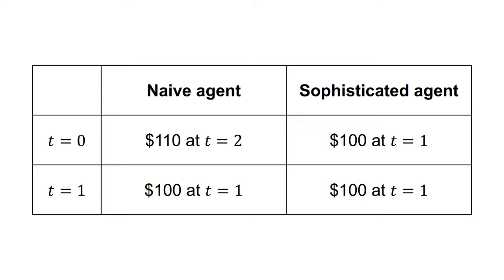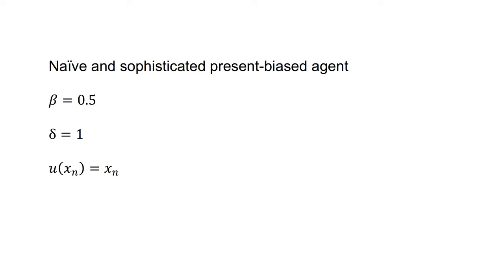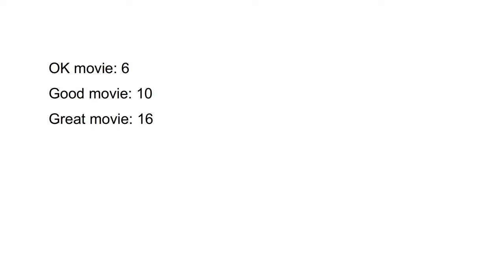We can summarize the decisions at each time as follows in this table. For the second example, suppose we have a naive and a sophisticated present biased agent, each with beta equals 0.5 and delta equals 1 — they are present biased but beyond that present bias demonstrate no impatience. We offer them the following choice: an okay movie today (t=0) giving utility of 6, a good movie next week (t=1) giving utility of 10, or a great movie in two weeks (t=2) giving utility of 16. We also tell the agents that next week they will be offered an opportunity to change their mind.